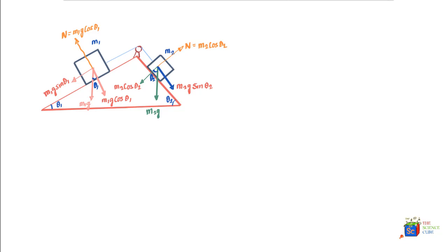Now let's define the axes. For M1, this direction along the incline is the x-axis and the perpendicular is the y-axis. Any vector pointing up the incline is positive and pointing down is negative. Likewise for mass M2, we take the x-axis along the incline and y-axis perpendicular, with vectors pointing up as positive and down as negative.